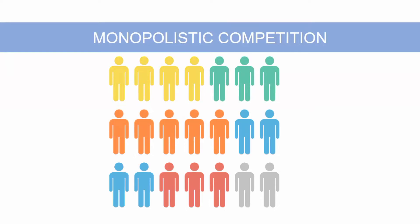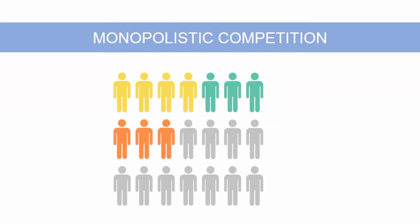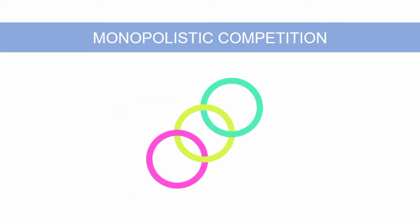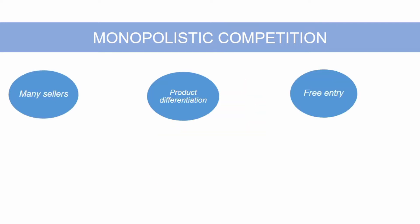Hello students, today we will discuss the third market structure, the monopolistic competition. Monopolistic competition is a market structure with the following characteristics. First, there are many firms competing for the same group of customers.